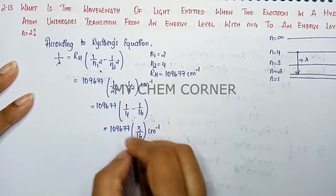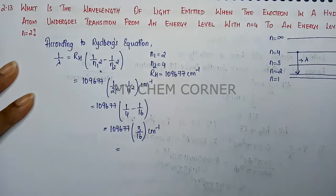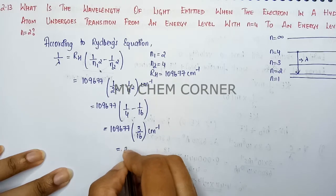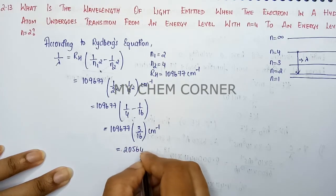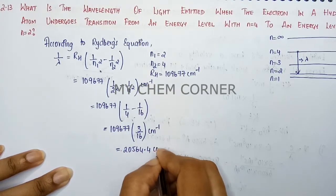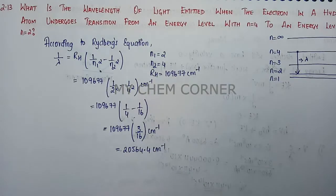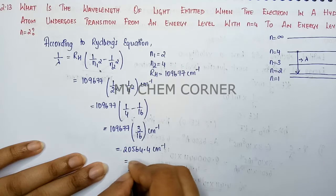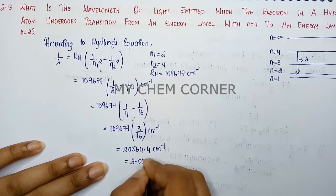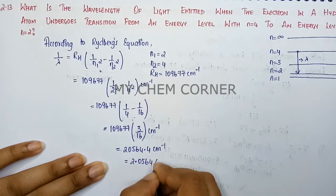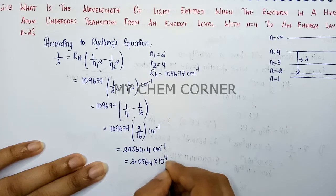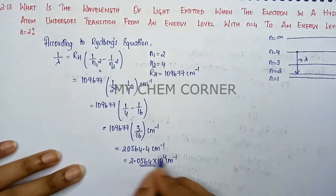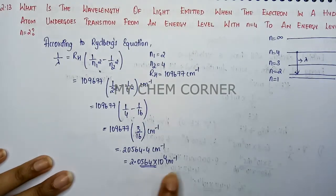When we multiply and simplify this, we will get 20,564.4 cm⁻¹. When we shift the decimal, we will get 2.0564×10⁴ cm⁻¹. This value is 1/λ.